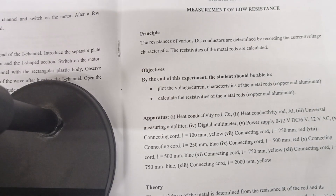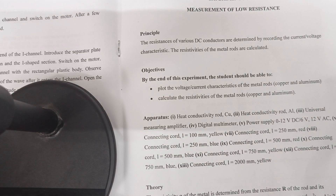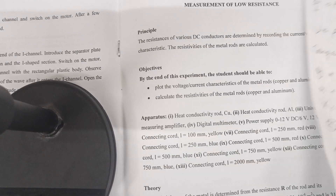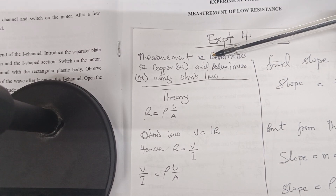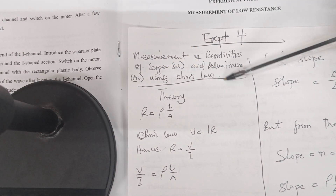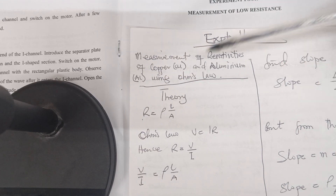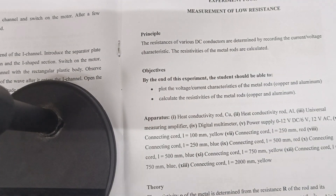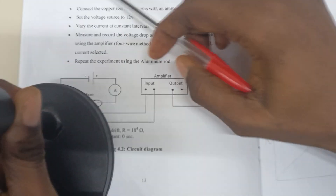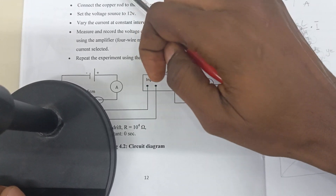Let's look at how to calculate the resistivities of two metals, namely copper and aluminium. We'll use Ohm's Law to find the resistivities of these two metals. The title of the experiment is 'Measurement of Resistivities of Copper and Aluminium Using Ohm's Law.' This is the setup — these are the two rods, and then our power supply.